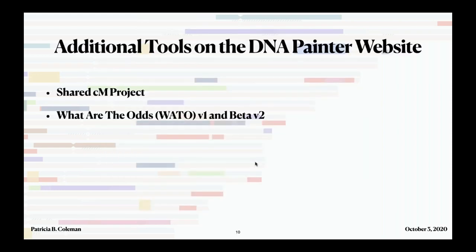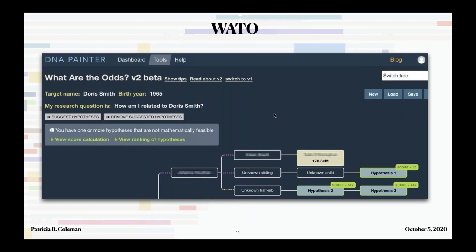Another tool on the DNA Painter website is What Are The Odds (WATO), which is handy for figuring out how a person matches in your tree. In the beta version, the program will go through and give you a number of different possible hypotheses to consider. You add a bunch of DNA matches and the amount of DNA they share, and it comes up with different hypotheses for where the person might fit in the tree.